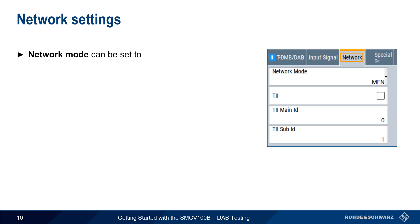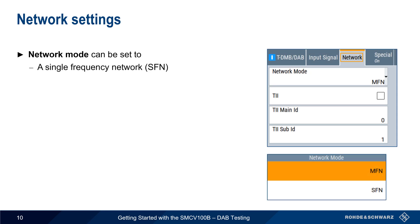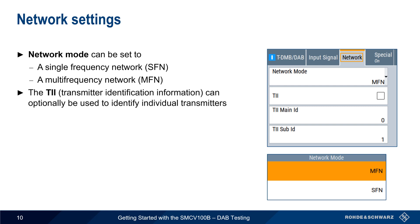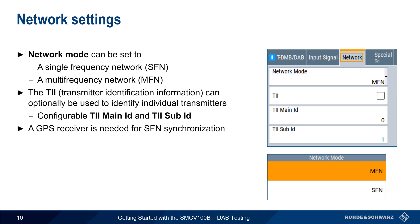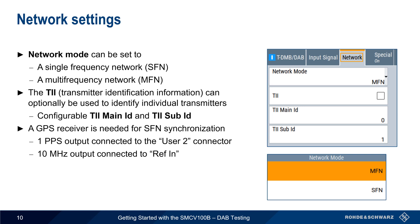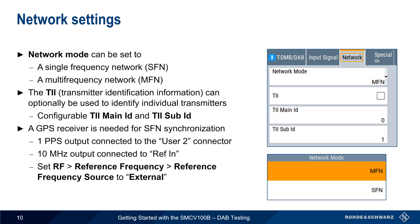The Network tab is used to configure the network mode, which can be set to either a single frequency network or a multi-frequency network. As mentioned, mode must be set to multi-frequency network when using a test signal as the source type. The SMCV also supports the optional TII, or Transmitter Identification Information parameter, and both a main and sub-TII can be configured. For single frequency networks, the SMCV supports GPS-based synchronization: the GPS receiver's 1 pulse per second output is connected to the User 2 connector on the rear panel, and the receiver's 10 MHz output is connected to REF-IN. Remember to also configure the SMCV to use an external reference frequency source.